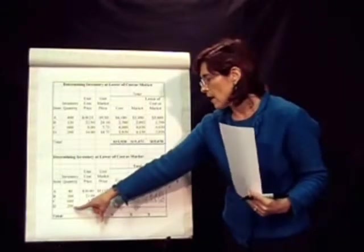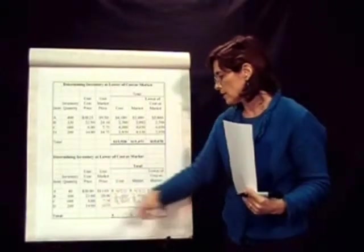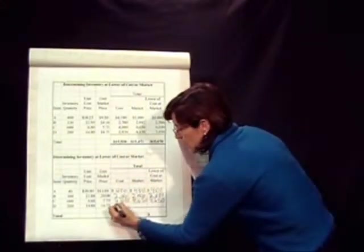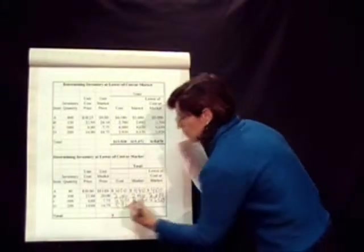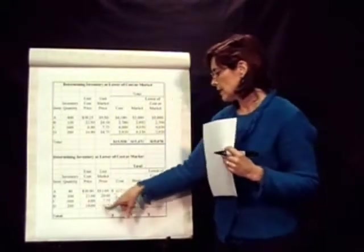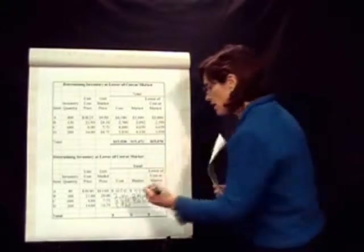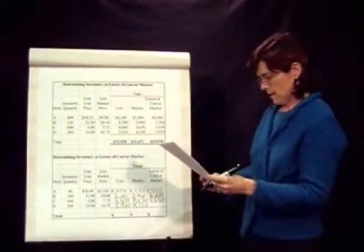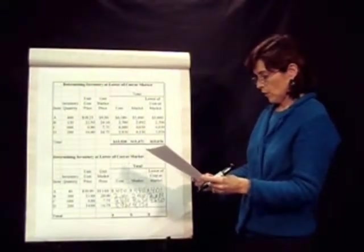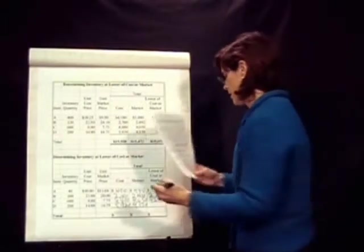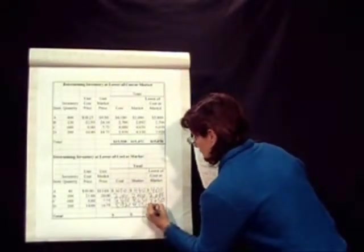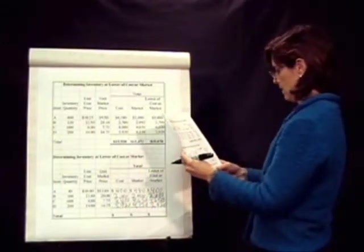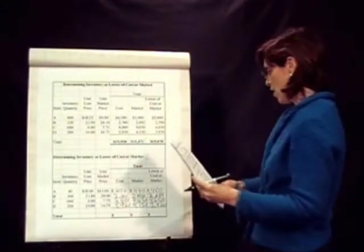And the last one down here, inventory quantity is 280. The unit cost is $14, so that would total $3,920 if we multiply it out. Then we have the 280 times $14.75, which is the market price, of $4,130. And which one is going to be lower, the $3,920, the cost.